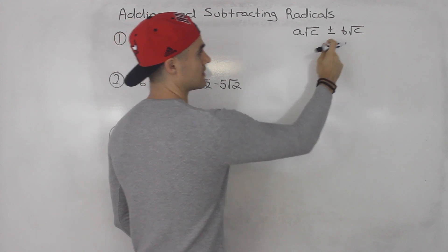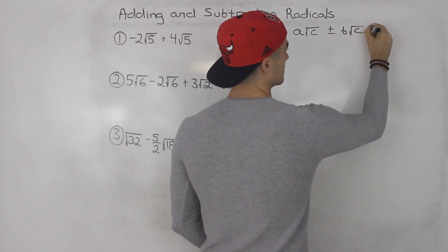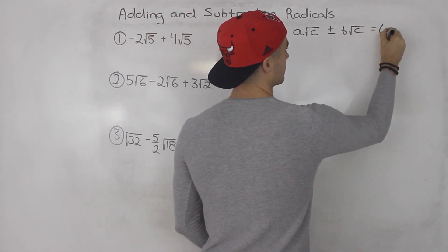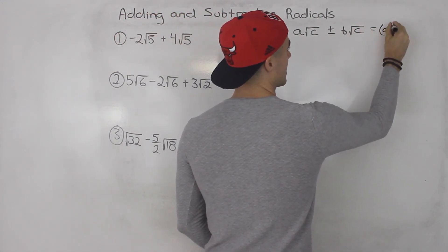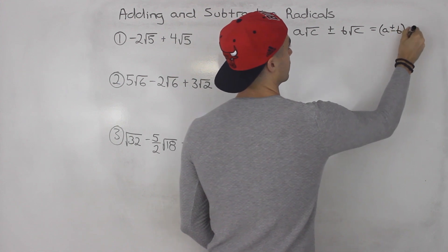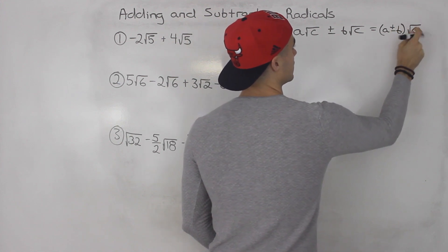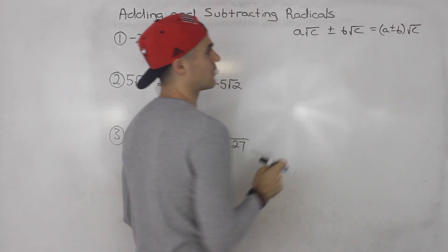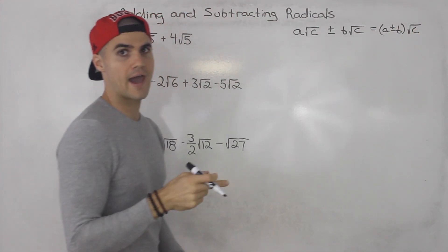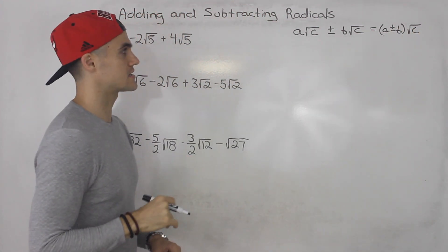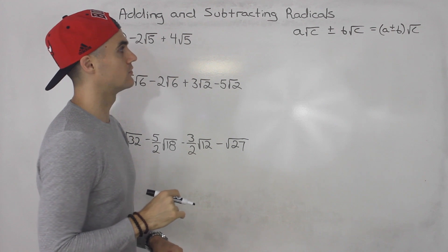If we have something like this, it would simplify to a plus or minus b root c. You keep the radical — you don't add whatever is inside the radical.